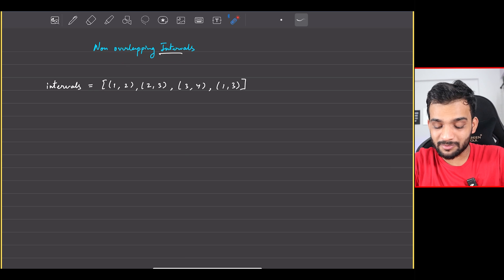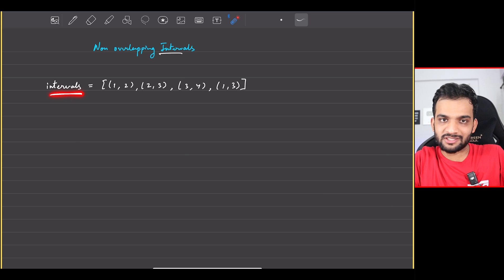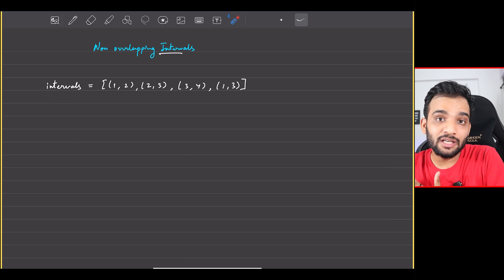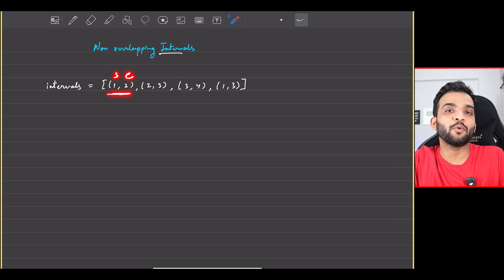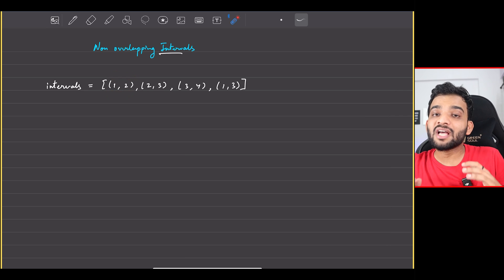So what is the problem stating? The problem states you'll be given an intervals array which will be having n intervals. The definition of an interval is it has a starting point and an ending point, right?